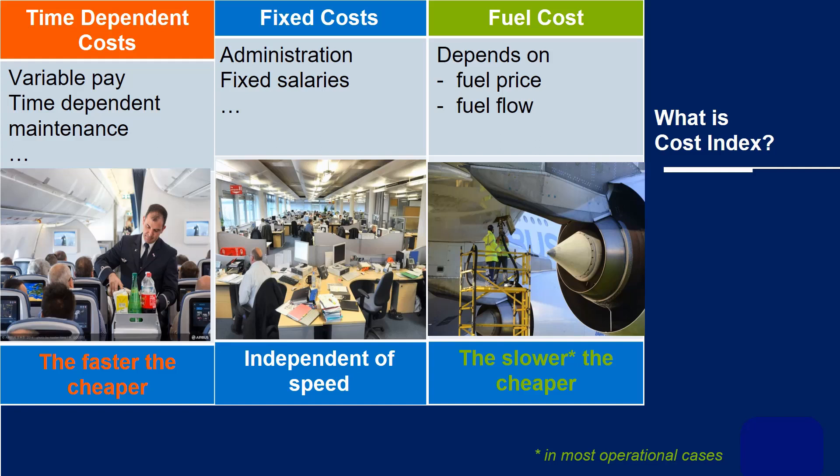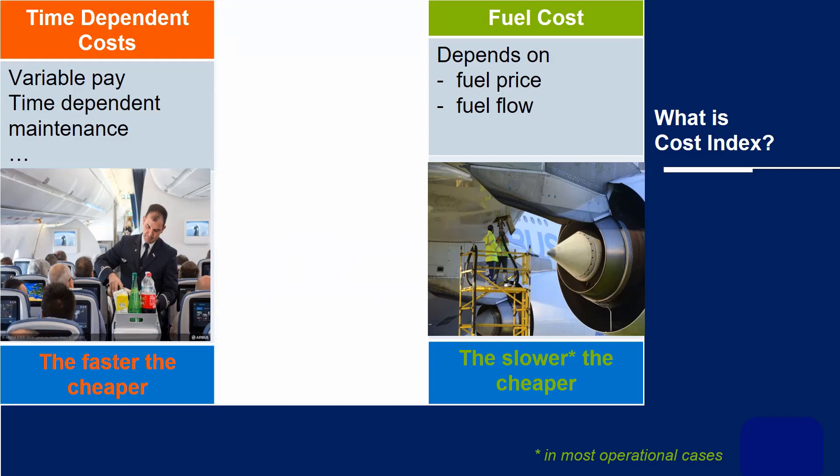If we look at these last two costs, pilots can influence these by their choice of cruise speed. If pilots fly fast, time costs will be reduced but more fuel will be burnt. If they fly slower, they will nearly always save fuel but the time cost of the flight will increase.